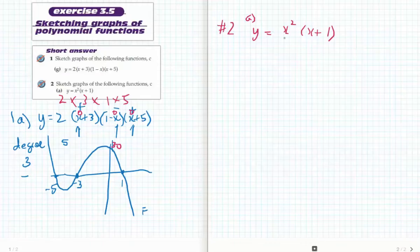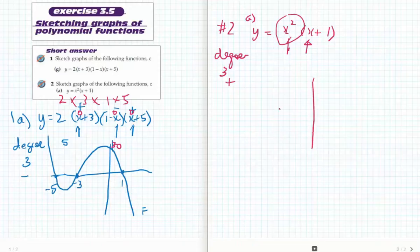In the second example, 2a, y equals x squared times x plus 1. This is an x squared, this is an x, so my degree again is 3. This x squared is positive, that x is positive, so it's going to be a positive degree 3. So a degree 3 will start down here and finish up here.